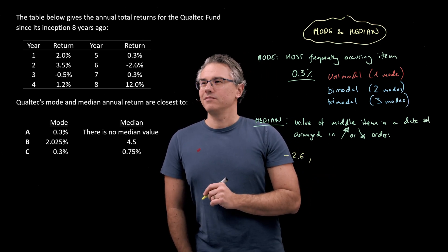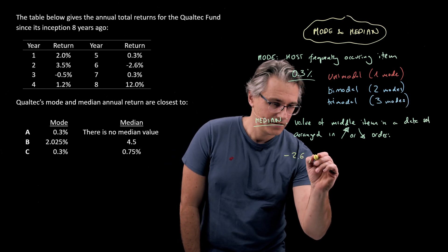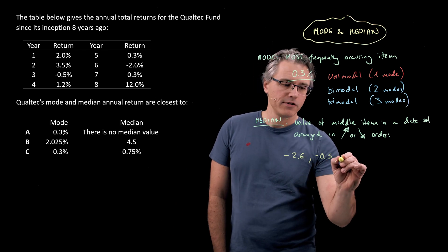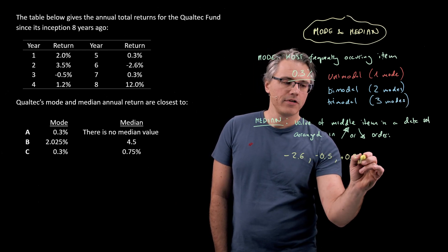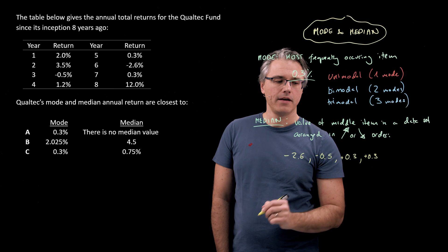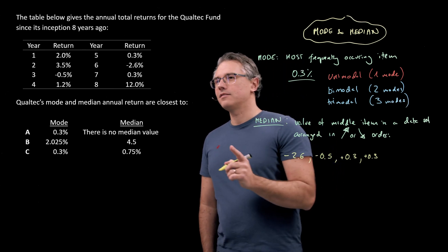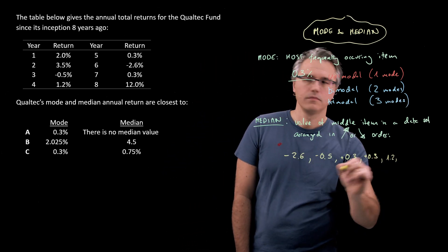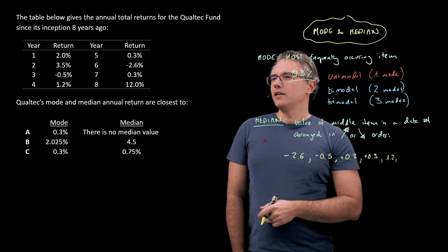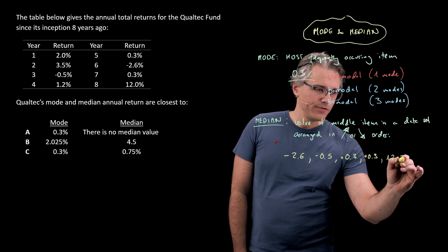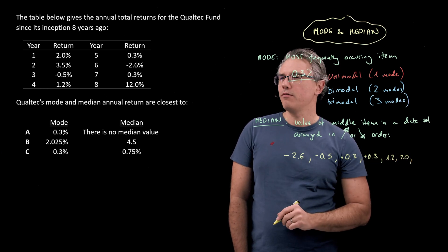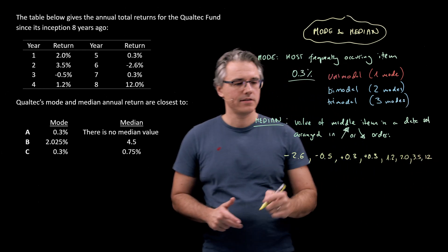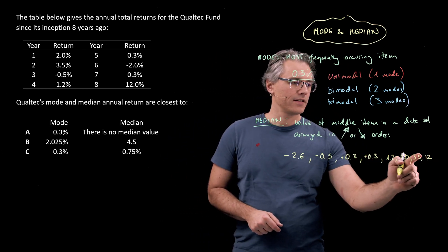So I guess this is a negative 2.6. Then we've got another negative, 0.5. Then we move into positive territory and we've got those two 0.3s. Okay. Then the next one, I guess, is going to be a 1.2. What's the next one? That's going to be the 2. Then we've got a 3.5. And a 12 at the end, right? So 1, 2, 3, 4, 5, 6, 7, 8.